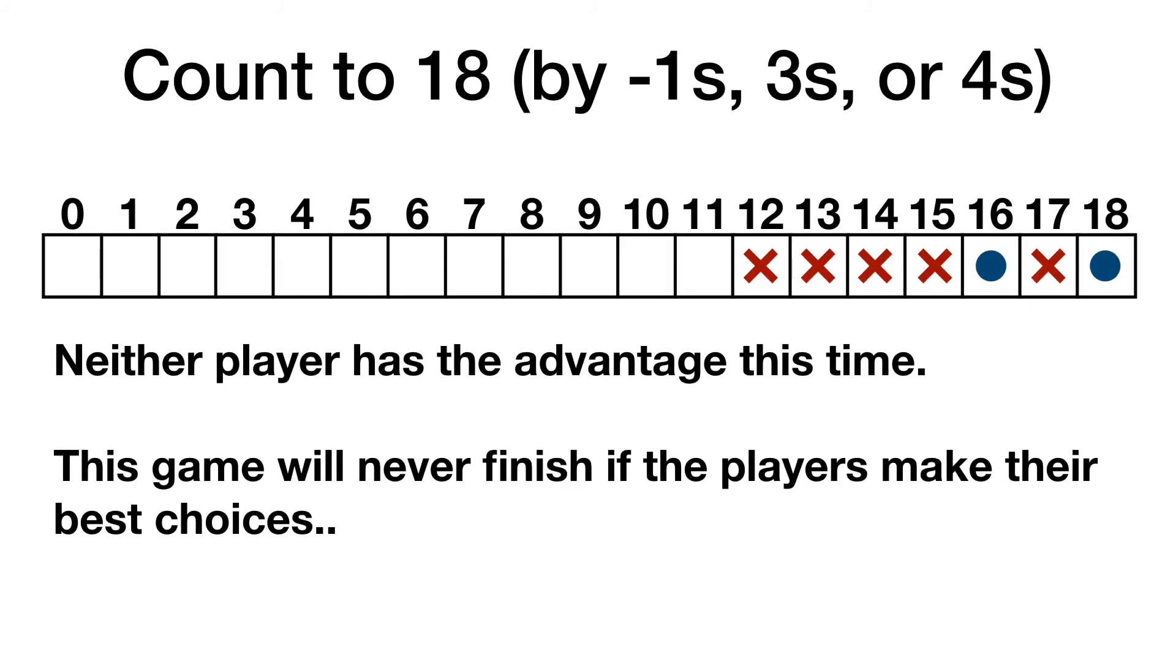In some variations where you allow negative numbers, the game would never end because neither player would be willing to count past a certain point. A smart player would keep the count below 12 in this variation.